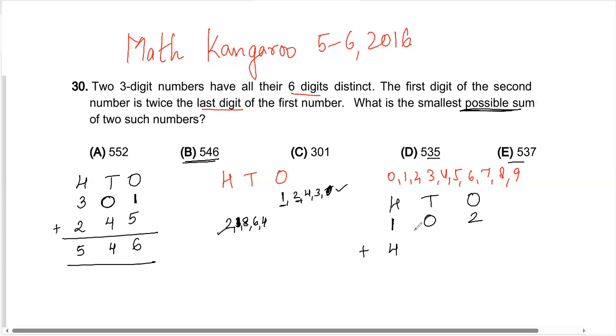So I have used one, zero, two and four. So I can put a three here and I can put a five here. So if I add it up, I get the total of 537. So I will go with this combination of numbers. So my answer is option E, 537.